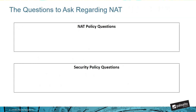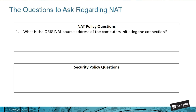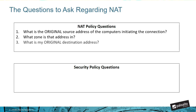To start off, there are four questions that you should ask in a specific order that will help better explain our NAT process. Question 1: what is the original source address of the computers initiating the connection? Question 2: what zone is that address in? Question 3: what is my original destination address? And question 4: what zone is that address or collection of addresses in?